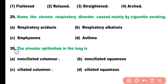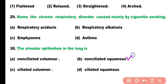Question number 30. The alveolar epithelium in the lungs is: non-ciliated columnar, non-ciliated squamous, ciliated columnar, or ciliated squamous. Correct answer is option 2 (B). The alveolar epithelium in the lungs is non-ciliated squamous type, which helps in diffusion of gases within the alveoli.